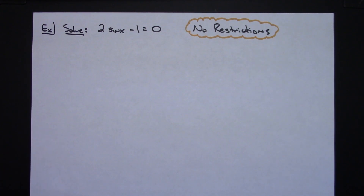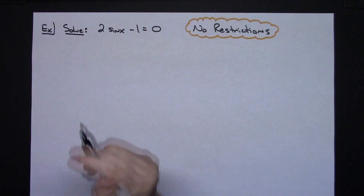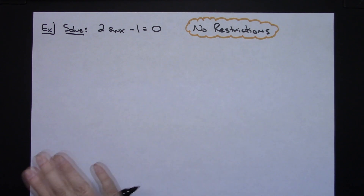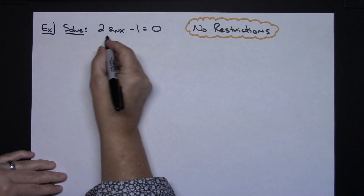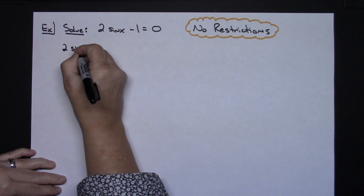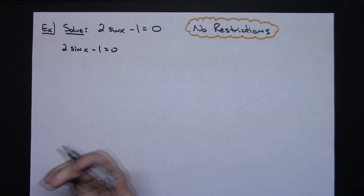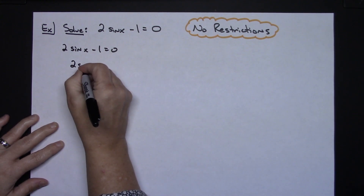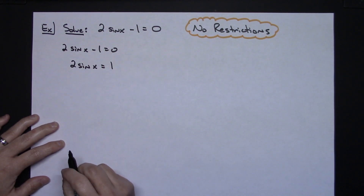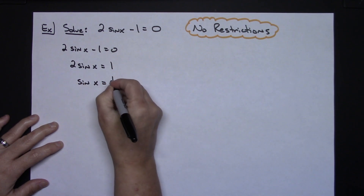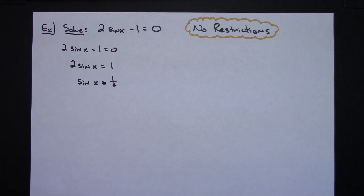With that background, let's solve 2 sine x minus 1 equals 0 with no restrictions — meaning I want every possible answer as a general solution. I'll solve this algebraically: add 1 to both sides to get 2 sine x equals 1, then divide by 2 to get sine x equals one half.